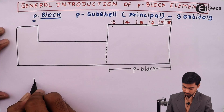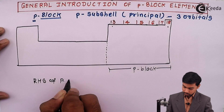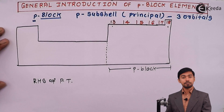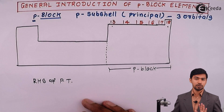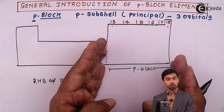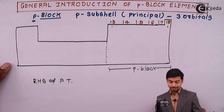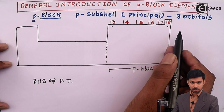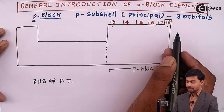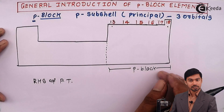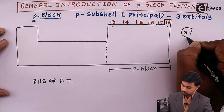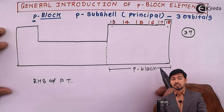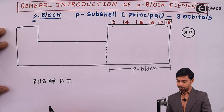By observing the schematic representation, we can say that p-block elements are at the right-hand side of the periodic table. Out of 18 groups, six groups constitute the p-block — group numbers 13 to 18. In terms of periods, they span from period number 1 to period number 7. In totality, there are 37 elements in the p-block, of which seven elements are in group 18, called zero group elements, and the remaining 30 elements are in groups 13 to 17.